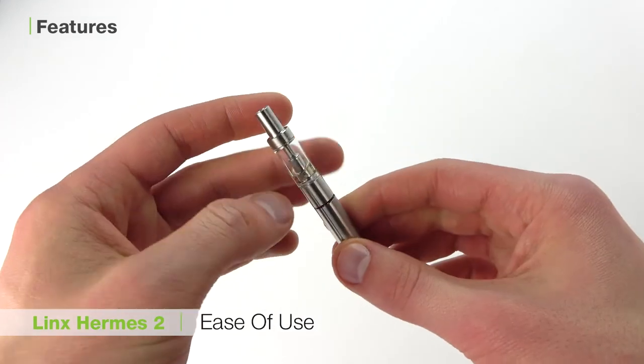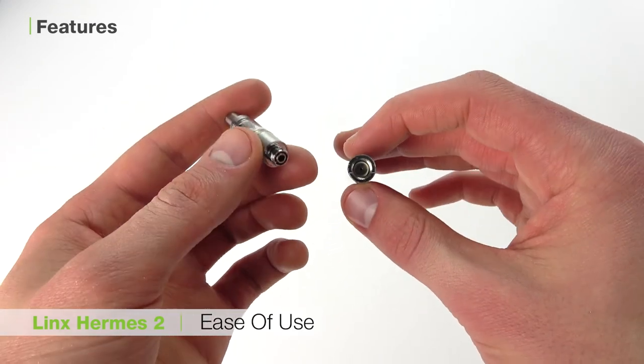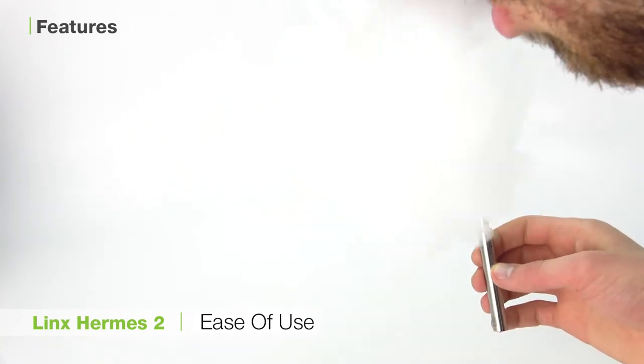The second is the Lynx Hermes II's ease of use. This unit features button-free operation and comes apart easily for simple loading and cleaning. If you're looking for one of the breeziest oil vaporizers available, this should do the trick.